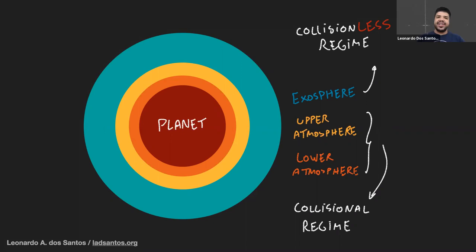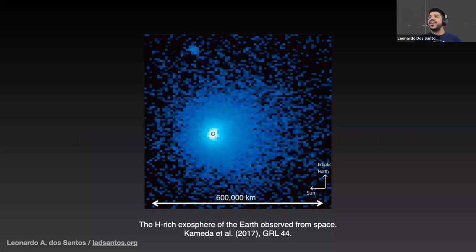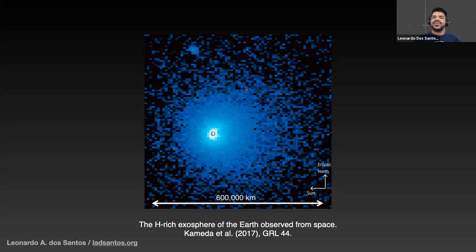This is how Earth's exosphere looks. This is one of my favorite observations ever — it was a small satellite launched by a team in Japan, and the observation was taken about 1.5 AU distant from the Earth. The Earth is this tiny central pixel right here, and this giant blob you see is our own exosphere made of mostly hydrogen. These layers are very exposed to the high-energy environment around the planet and they react to it. One of their main reactions is what we call atmospheric escape, when gas particles are no longer gravitationally bound to the planet.